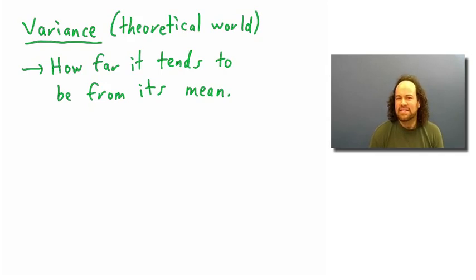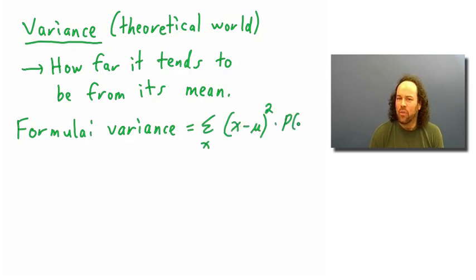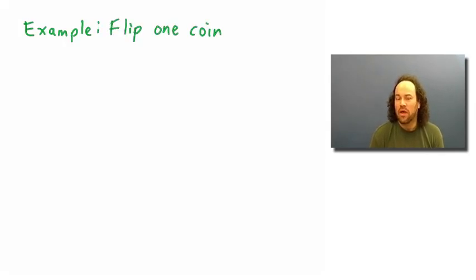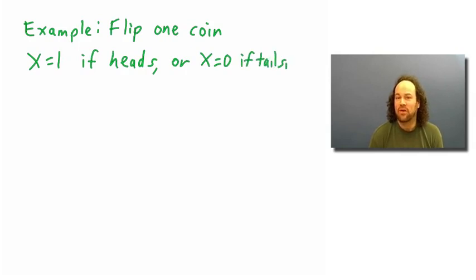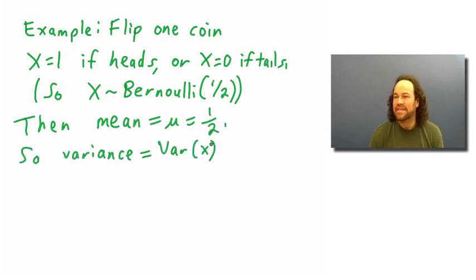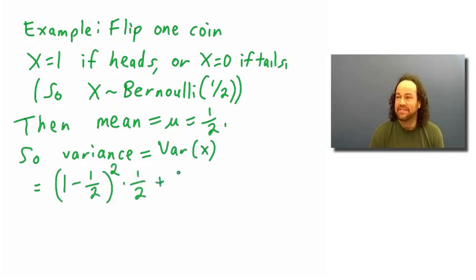The formula is a little more complicated. We take a sum of all the squared differences between the value and its mean, multiplied by the probability — it's the expected value of how far the random variable is from its mean, squared. For example, if we flip one coin and x is 1 for a head or 0 for a tail, the variance is (1 - 1/2)²×(1/2) + (0 - 1/2)²×(1/2), which works out to 1/4.